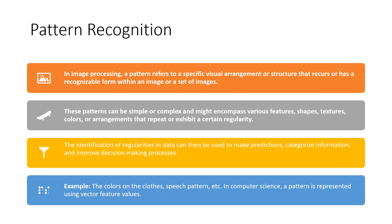What is a pattern, first of all? A pattern refers to a specific visual arrangement or structure that recurs or has a superb, easily recognizable form within an image or set of images. It has to have a specific visual arrangement or structure that can be easily recognized.